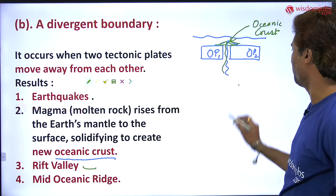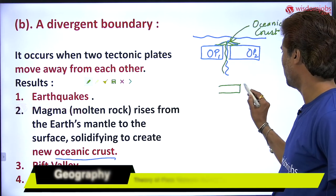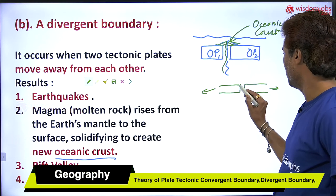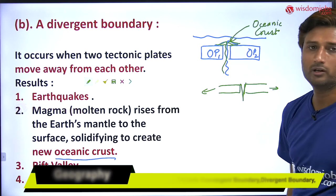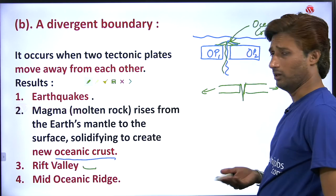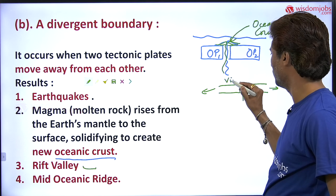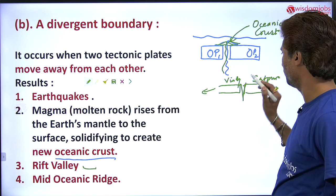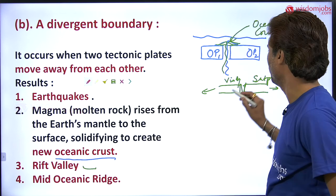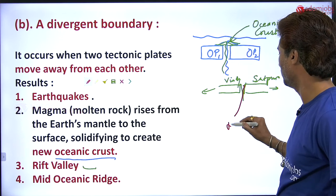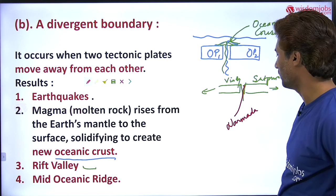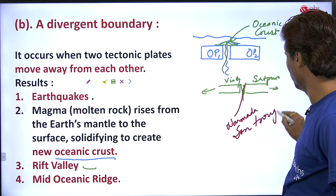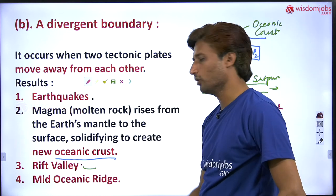Another result is rift valley. One part and another part moving in different directions results in the formation of a rift valley. For example, this is the Vindhya range and this is the Satpura range. In between, the river Narmada flows through a rift valley — the Narmada-Soan trough. So a rift valley is forming.